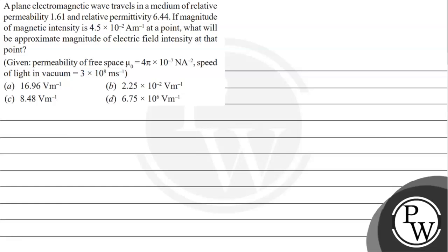Let's read the given question. A plane electromagnetic wave travels in a medium of relative permeability 1.61 and relative permittivity 6.44. If the magnitude of the magnetic intensity is 4.5 × 10⁻² ampere per meter at a point, what will be the approximate magnitude of electric field intensity at that point? Given permeability of free space μ₀ as 4π × 10⁻⁷ N/A², and speed of light in vacuum as 3 × 10⁸ m/s.